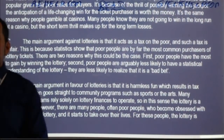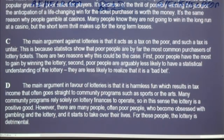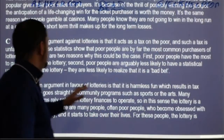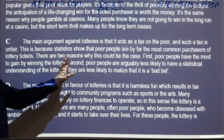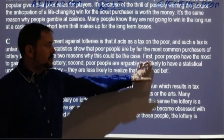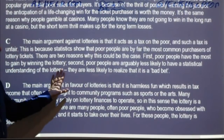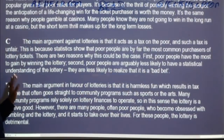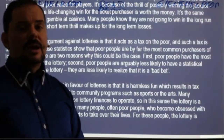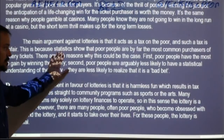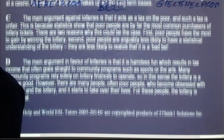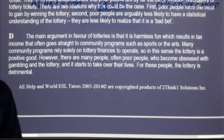Let's keep reading. Paragraph C: 'The main argument against lotteries is that it acts as a tax on the poor, and such a tax is unfair. Statistics show that poor people are by far the most common purchasers of lottery tickets. First, poor people have the most to gain by winning. Second, poor people are arguably less likely to have a statistical understanding of the lottery — they are less likely to realize that it is a bad bet.' What is this paragraph about? Poor people play the lottery the most, because they can win and they don't fully understand the odds.